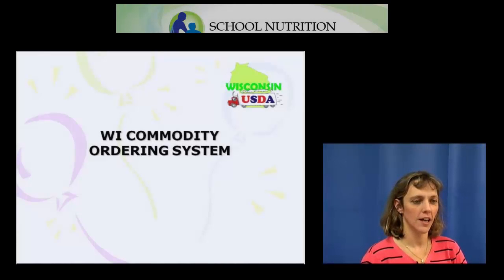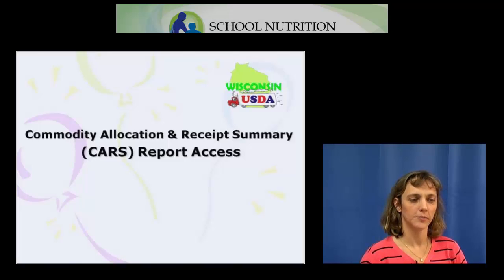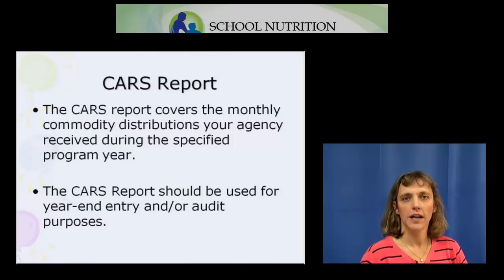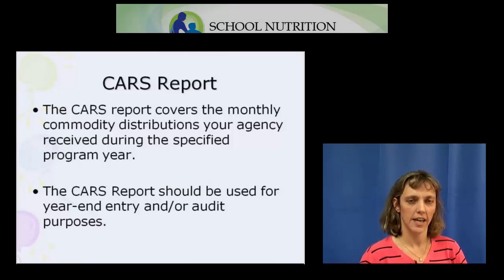Welcome to the MediaSite training on accessing the CARS report in the Wisconsin Commodity Ordering System. The CARS report stands for Commodity Allocation and Receipt Summary, but most people refer to it as the CARS report. It covers the monthly commodity distributions that your agency has received over the specified program year or school year, and is typically used for year-end entry and auditing purposes at the end of the year.